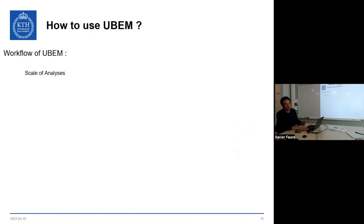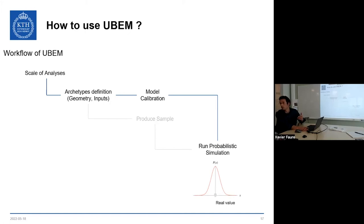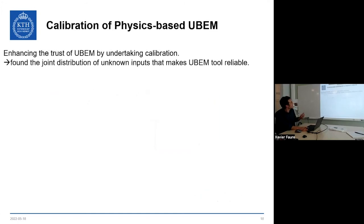The U-BEM workflow proceeds from scale of analysis, to archetype definition, to geometry and model inputs, then sample generation using copulas, and finally simulation. But accuracy is still uncertain without calibration. If we can calibrate the model against real measured data, we can use it with much greater trust — for example to forecast the impact of changing windows, increasing insulation, or installing a heat pump.